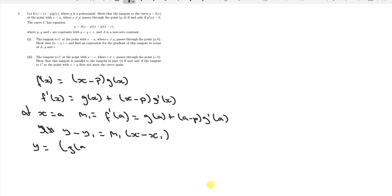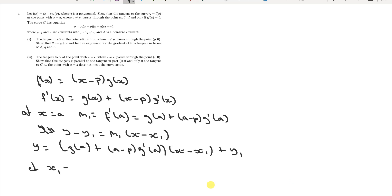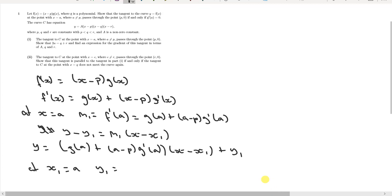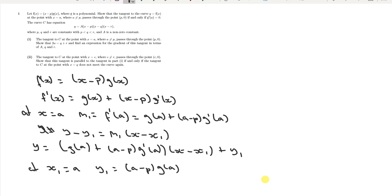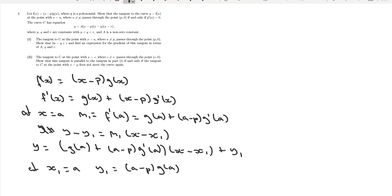So we have y = g(a) + (a − p)·g'(a) — that's the gradient substituted into the tangent formula. We also know the curve passes through x = a, so x1 = a and y1 = f(a) = (a − p)·g(a). We substitute both values into the tangent equation to get the equation of tangent T1.